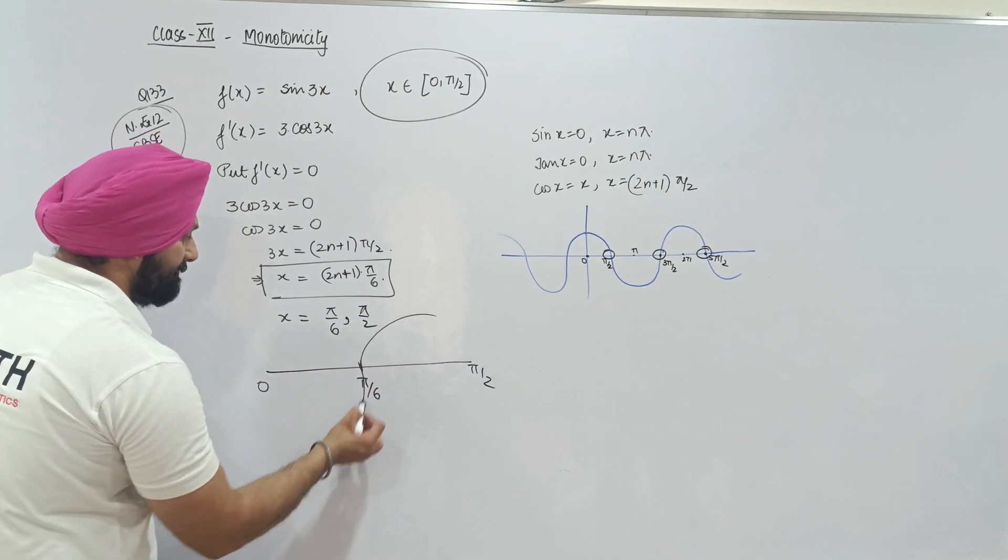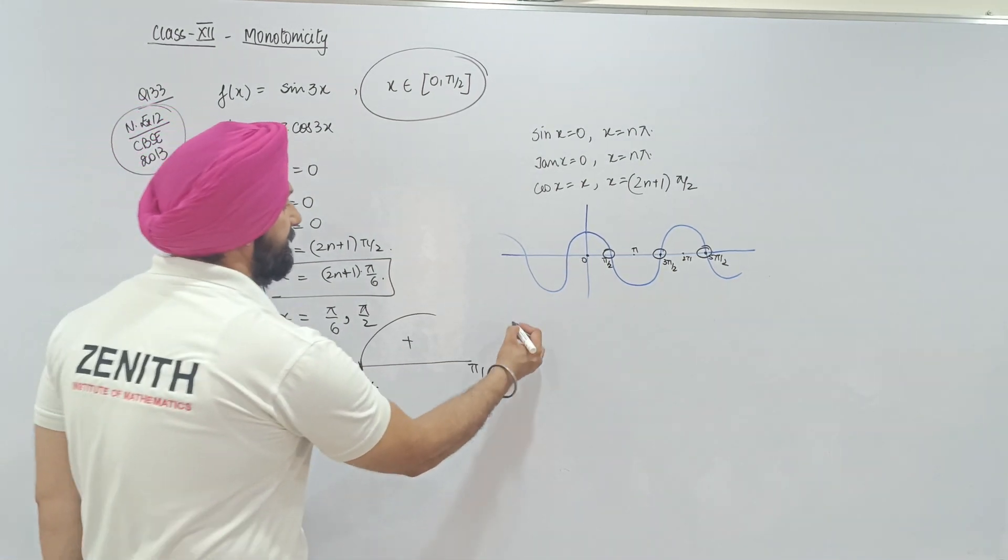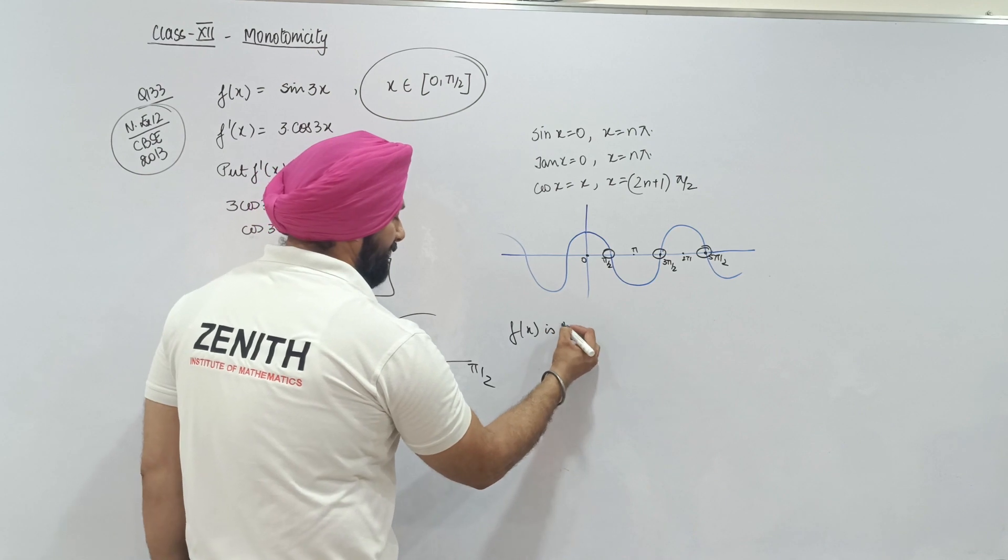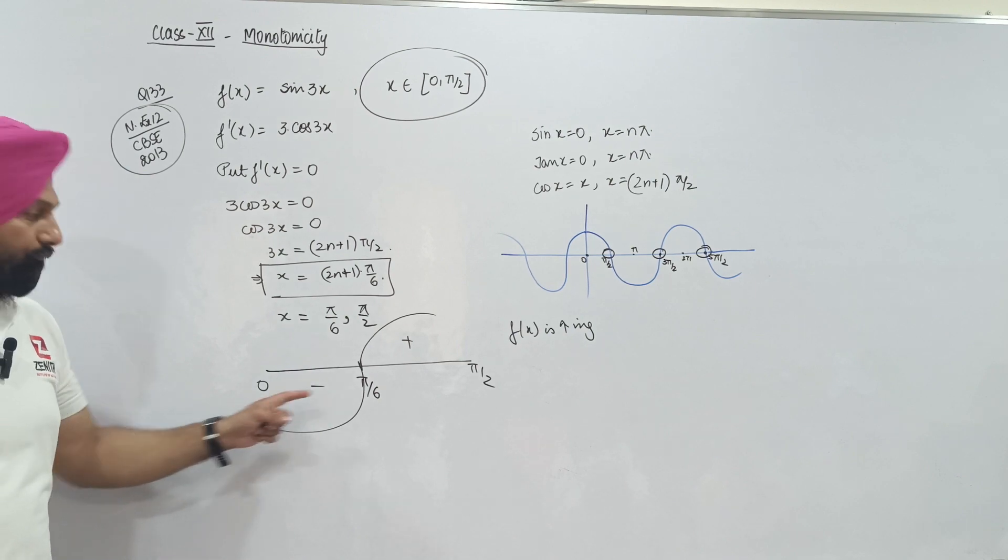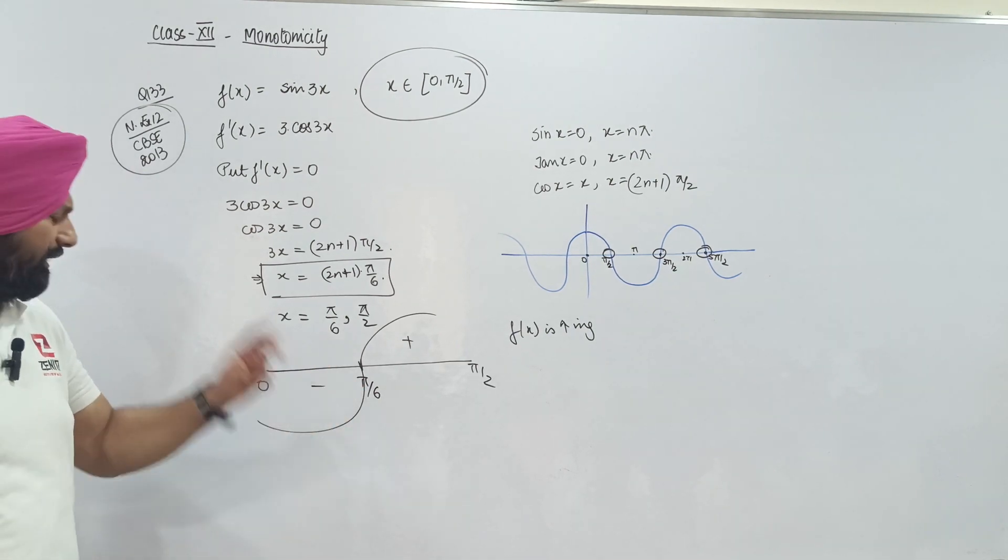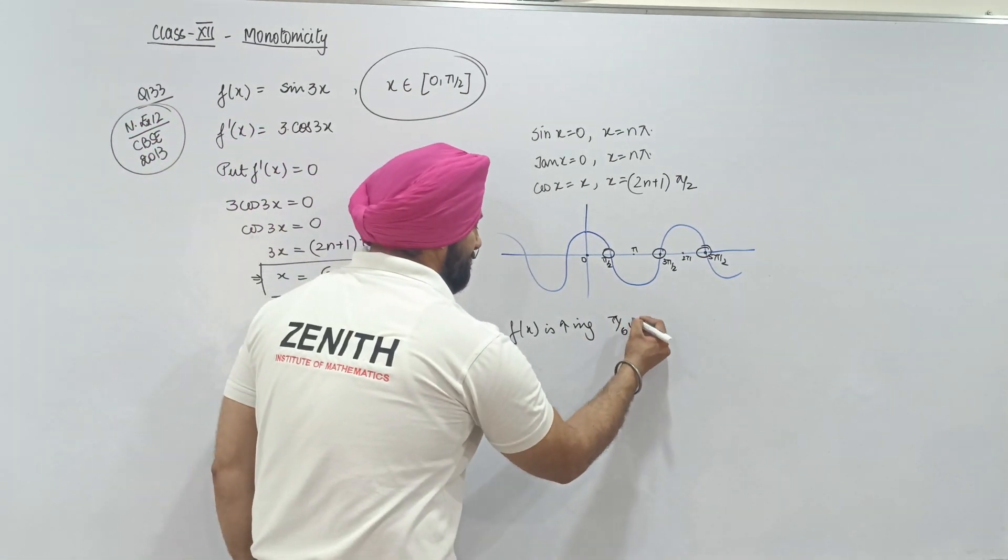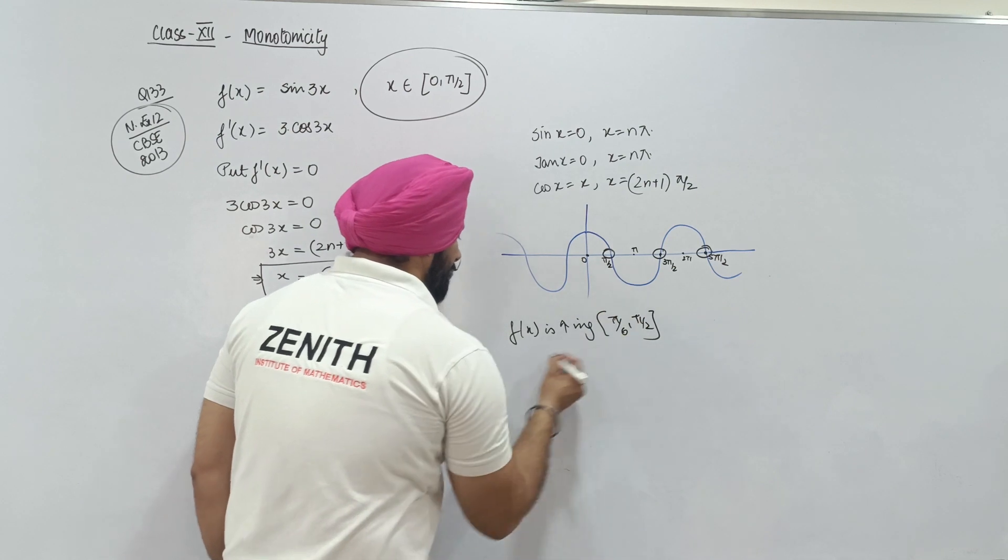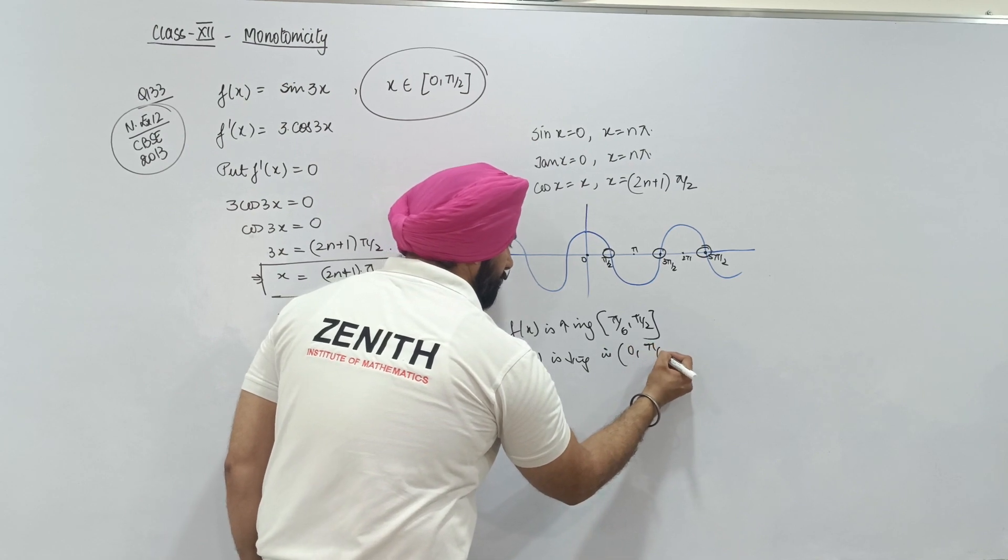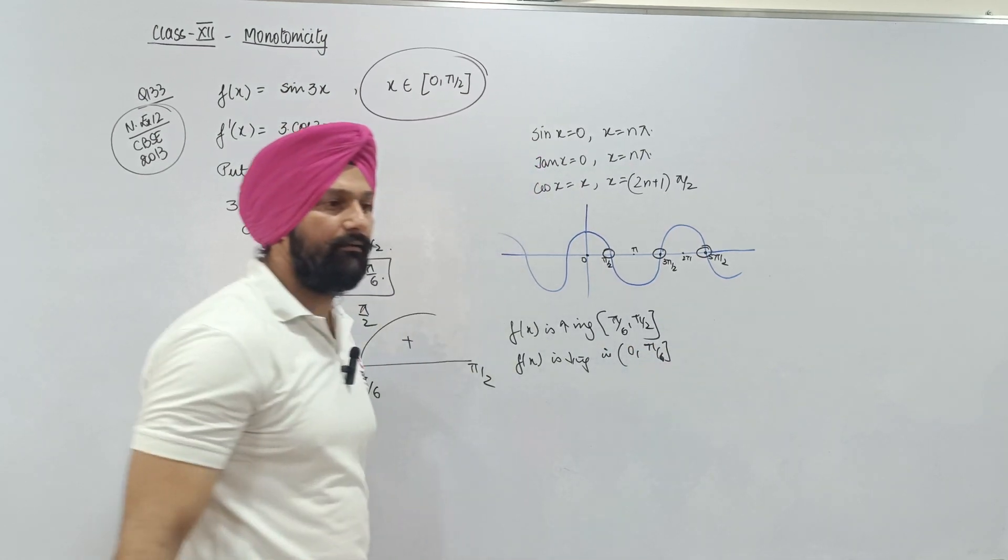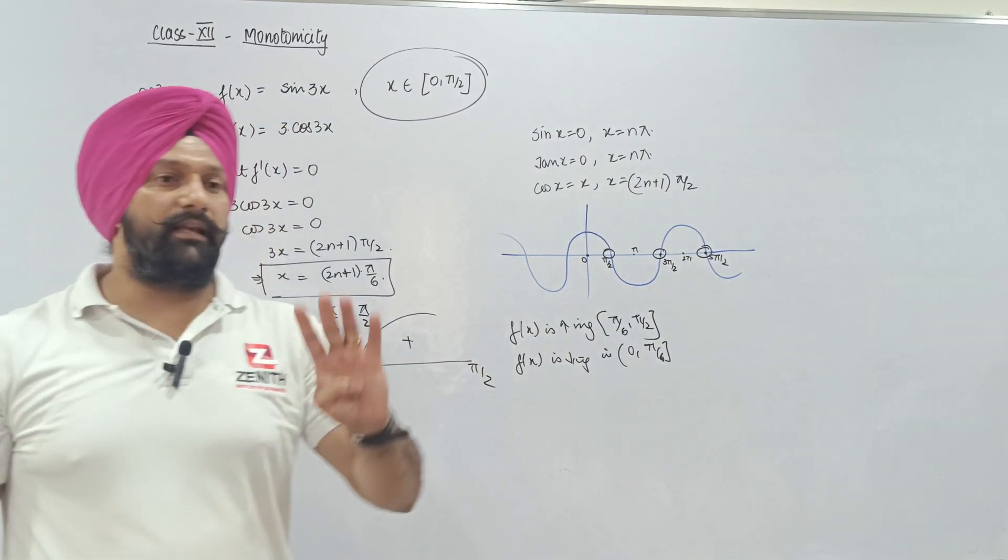Function becomes plus or minus. Is that clear? Function increasing where? From 0 to π/6. Decreasing where? From π/6 to π/2. And function is decreasing from 0 to π/6. Is this point clear?